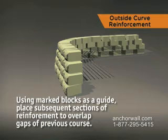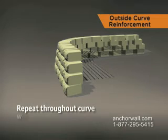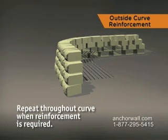Backfill and compact using the marked blocks as a guide. Place subsequent sections of reinforcement to overlap the gaps left on the previous course. This will ensure total reinforcement coverage. Repeat this procedure throughout the construction of the radius curve when reinforcement is required.